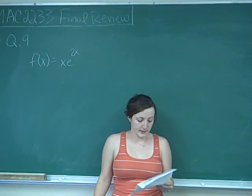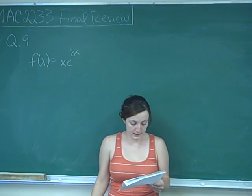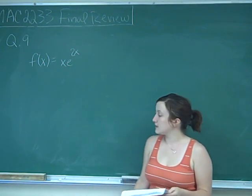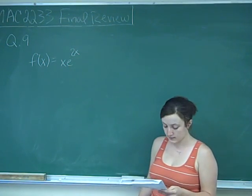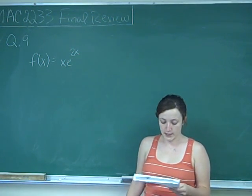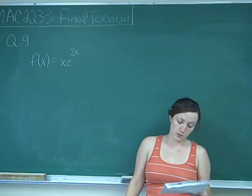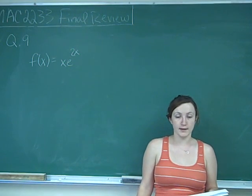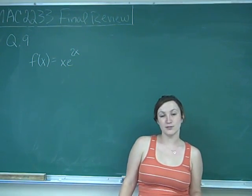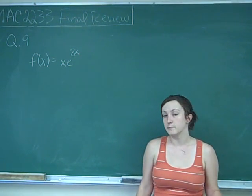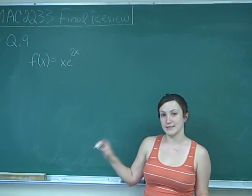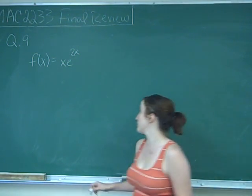This is question number 9, and it says if f of x is equal to x e to the 2x, find each x value at which the graph of f of x has a horizontal tangent line. Horizontal tangent line means the slope is equal to 0, so we're going to need to take the derivative of this.